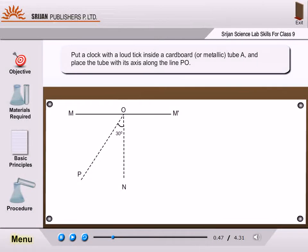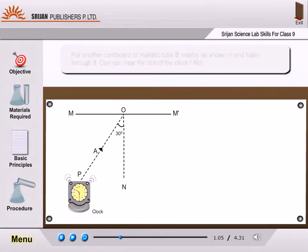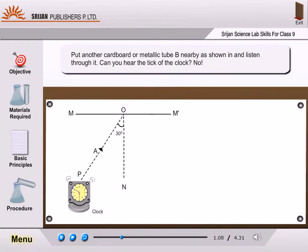Put a clock with a loud tick inside a cardboard or metallic tube A and place the tube with its axis along the line PO. Put another cardboard or metallic tube B nearby as shown in figure 8.4a and listen through it.